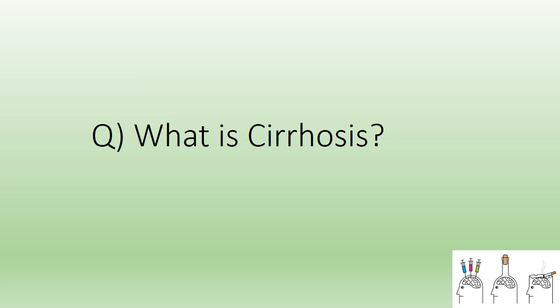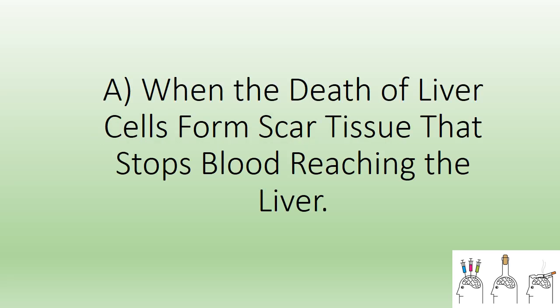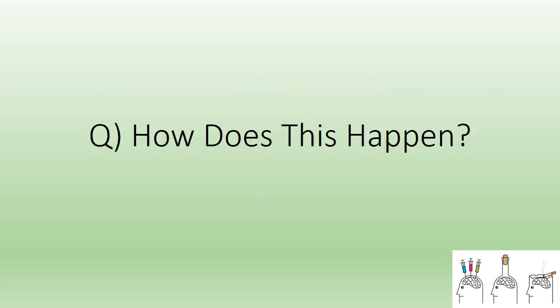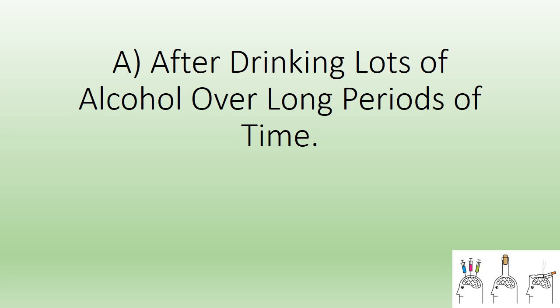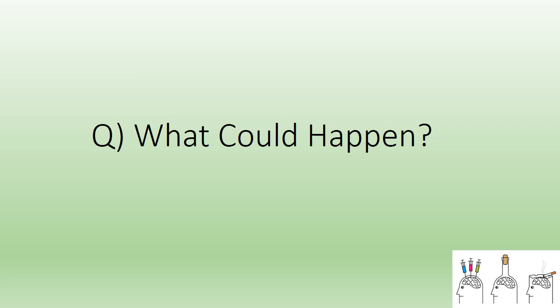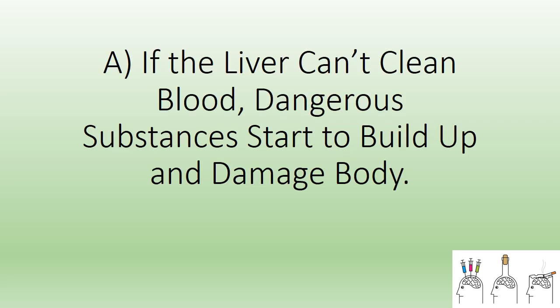What is cirrhosis? When the death of liver cells forms scar tissue that stops blood reaching the liver. How does this happen? After drinking lots of alcohol over long periods of time.